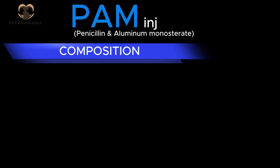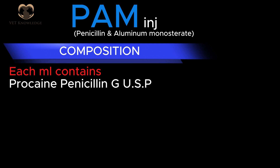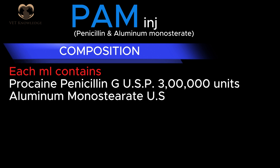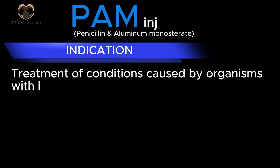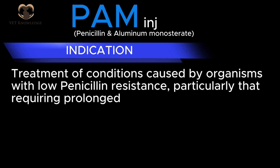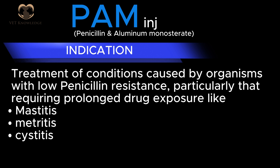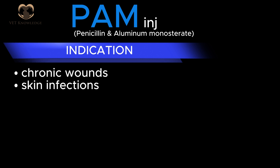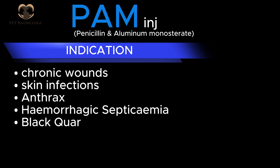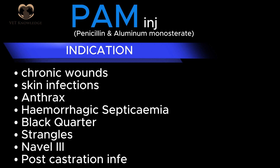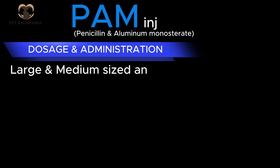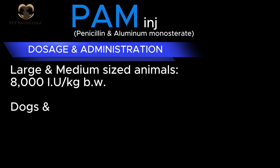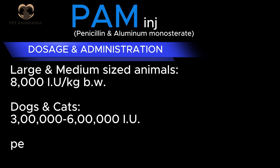PAM — Penicillin and Aluminum Monostearate: composition — each ml contains Procaine Penicillin G USP 300,000 units and Aluminum Monostearate USP 2%. Indications: treatment of conditions caused by organisms with low penicillin resistance, particularly those requiring prolonged drug exposure such as mastitis, metritis, cystitis, abscesses, chronic wounds, skin infections, anthrax, hemorrhagic septicemia, black quarter, strangles, navel ill, and post-castration infections. Dosage and administration: large and medium-sized animals 8,000 IU per kg body weight; dogs and cats 300,000 to 600,000 IU per animal for at least 3 days.